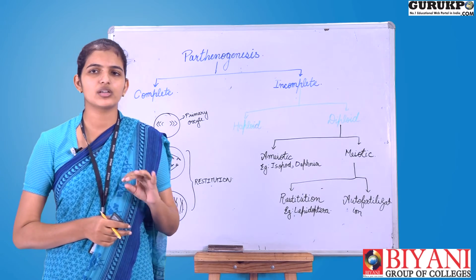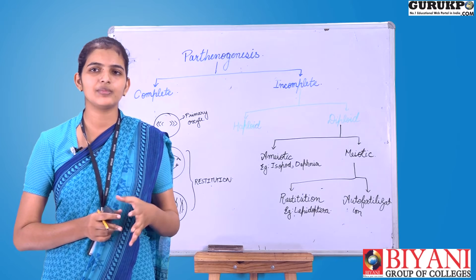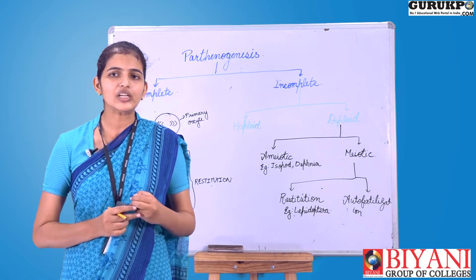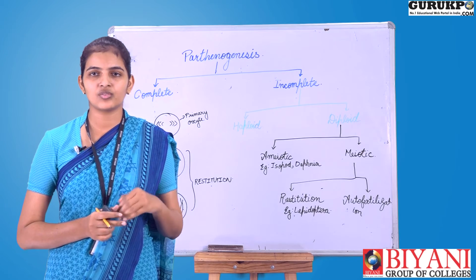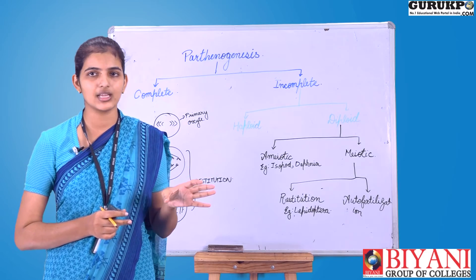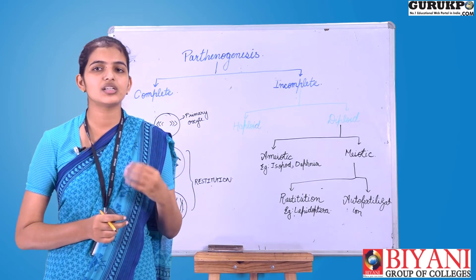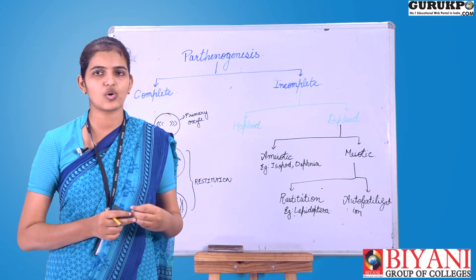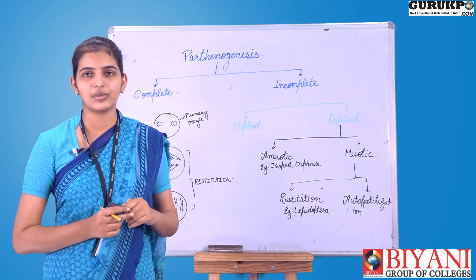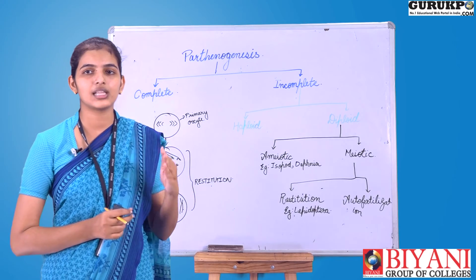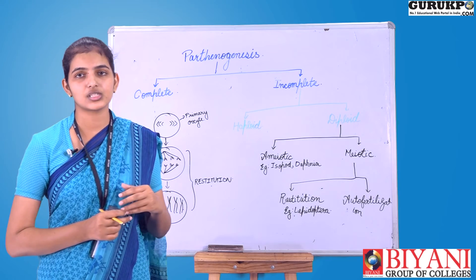Complete parthenogenesis occurs in animals such as bees — but only in some bees, specifically the male bees. Male bees develop from unfertilized eggs, and the number of chromosomes in the egg is haploid. This development of a male from an unfertilized egg is considered complete parthenogenesis because it is the natural form — no one has induced or forced it. However, since the chromosome number is reduced, it is also classified as haploid or incomplete parthenogenesis.